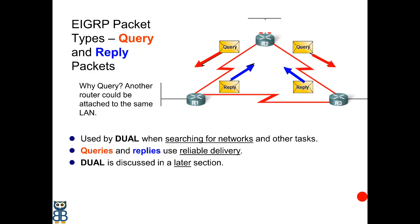When a route computation happens and there is no feasible successor, a query packet is sent to neighbors. Query packets are mostly multicast and require acknowledgement; in some specific cases they are sent as unicast. A reply packet is sent in response to a query packet, is always unicast, and is sent reliably.